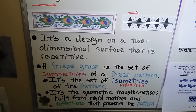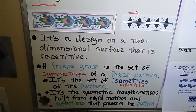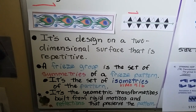A freeze group is the set of symmetries of a freeze pattern — the set of isometries of the pattern. We talked about isometries back in 4.1b. It's the geometric transformations built from rigid motions and reflections that preserve the pattern.